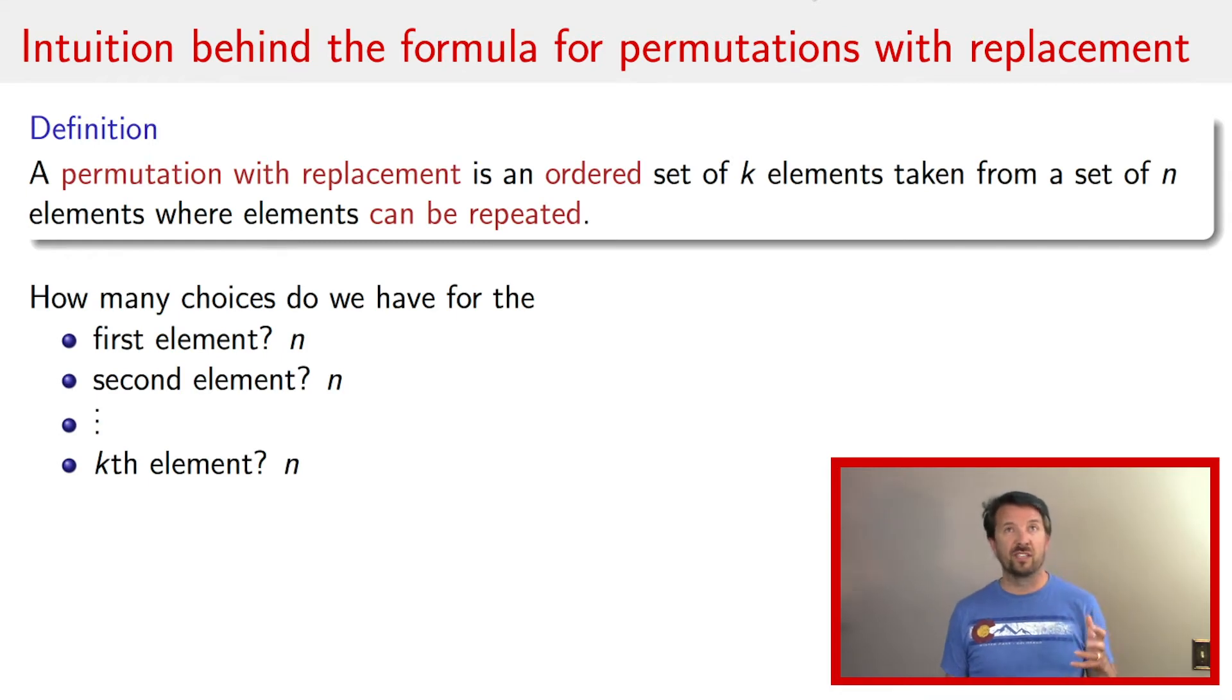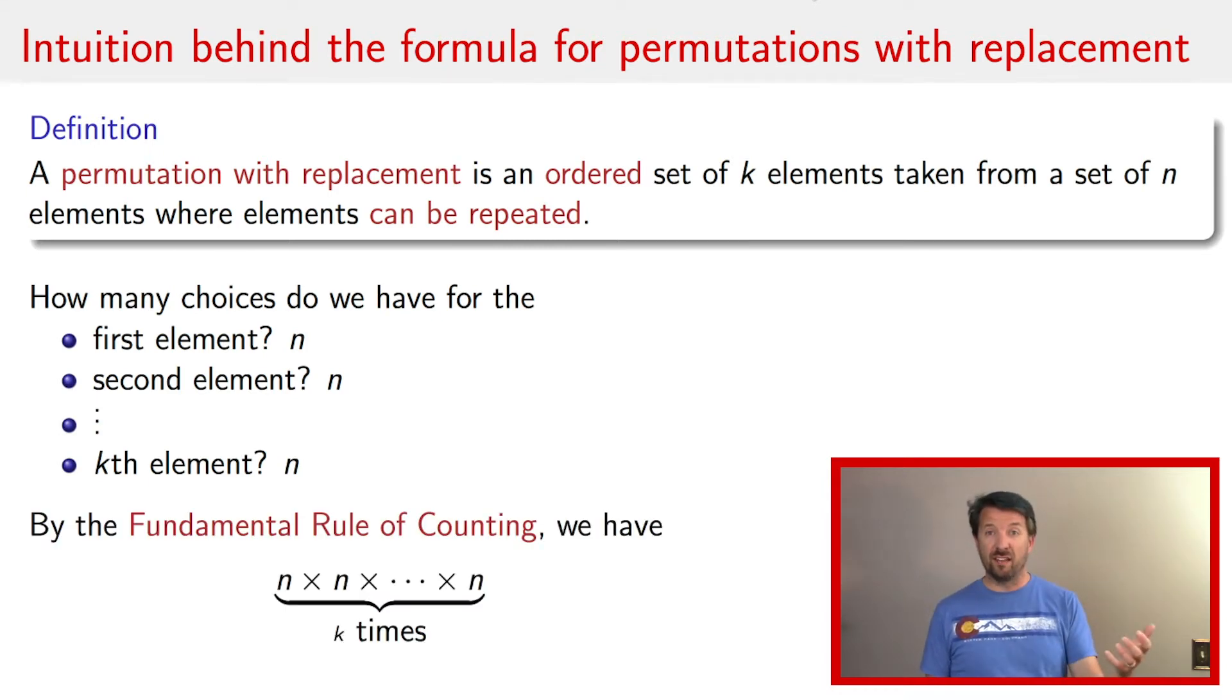And so now if we ask ourselves the question, how many ways are there to choose the first element, and the second element, and the third element, and all the way to the kth element? Well, that's just the fundamental rule of counting. We just take n times n times n and do that k times. Fortunately, we have shorthand for this. We just call it n raised to the kth power. And that is our formula for permutations with replacement, where n is the number of items in the original set and k is the number of items in our final set.